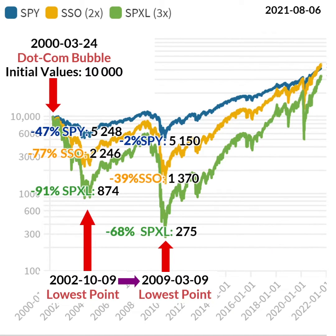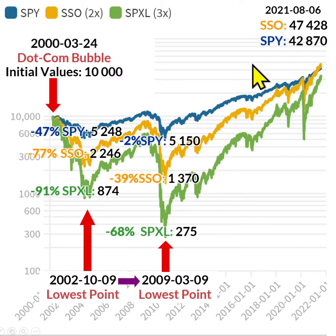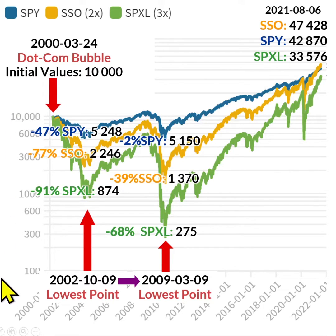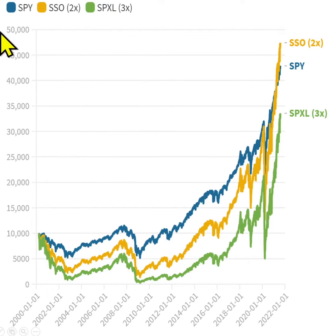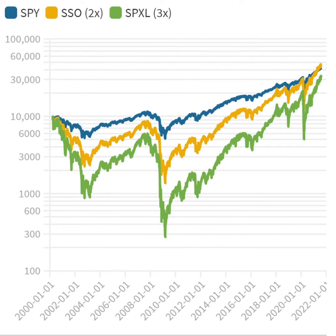What would the values be in August 2021? SPY: $42,000; SSO: $47,000; and SPXL: $33,000. The y-axis is on a log scale. If we check the linear scale, it is clear that all three funds would have been higher than the highest point in 2000. Let's go back to the log scale.